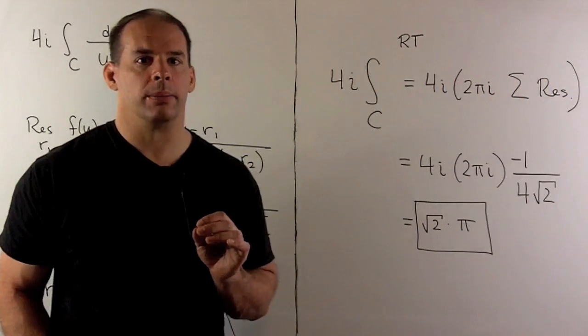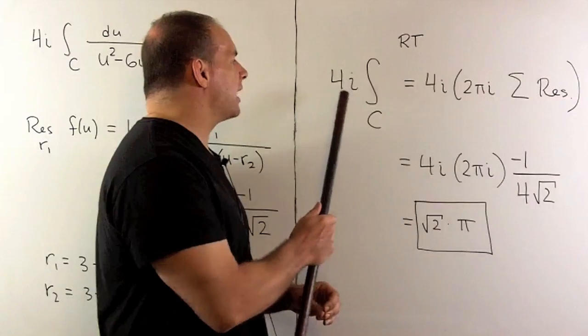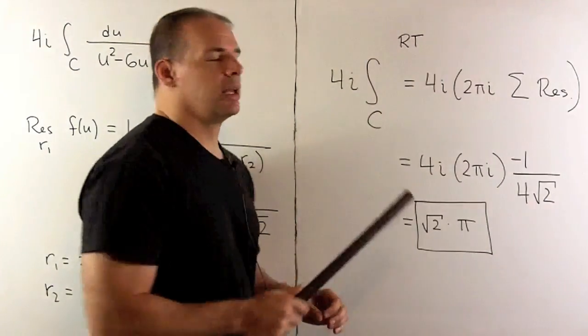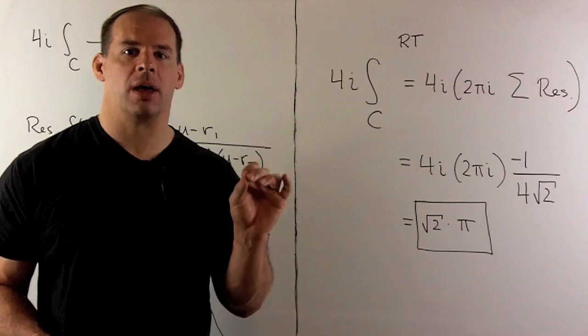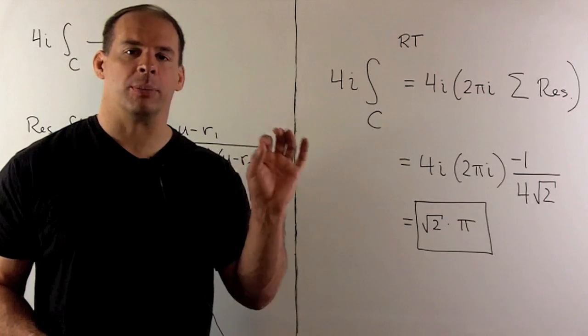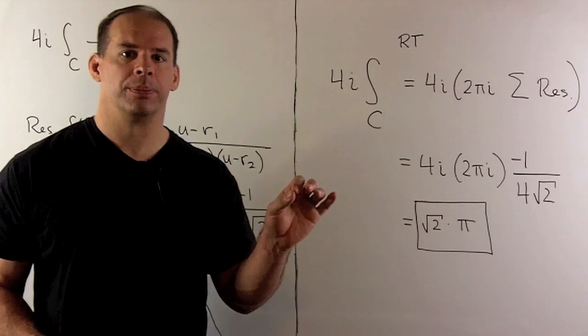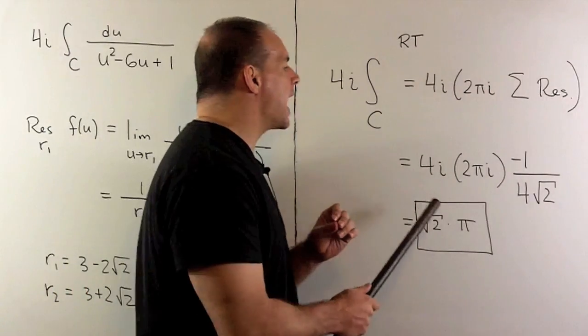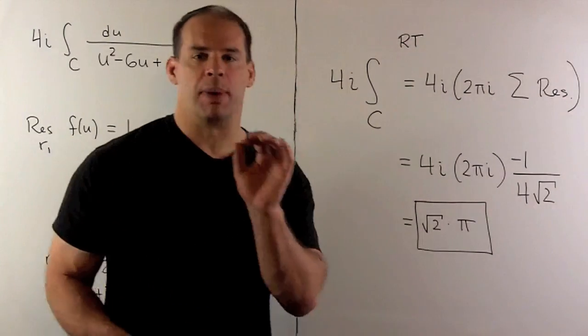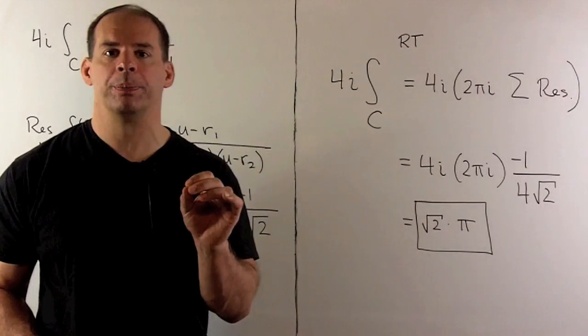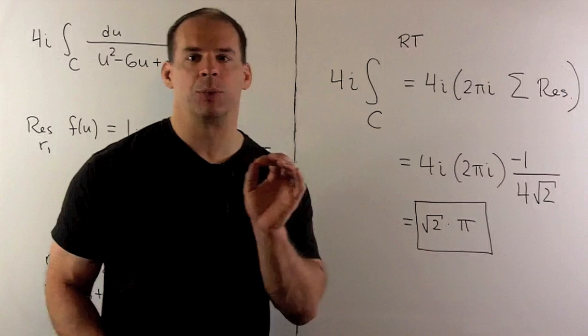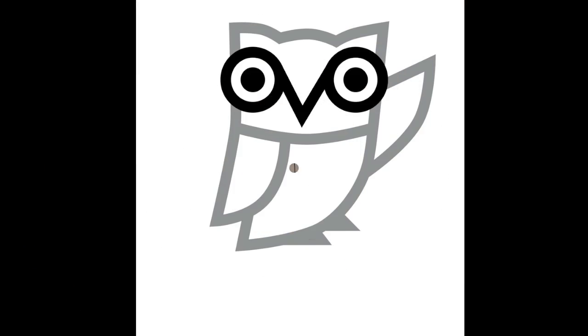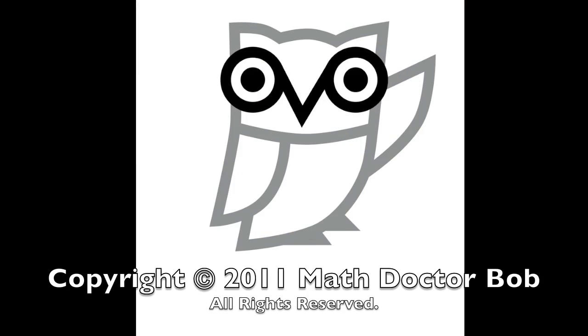We can invoke the residue theorem. We have 4i times our line integral. It's equal to 4i times 2πi times the sum of the residues at the poles in our region. So, we have 4i times 2πi times minus 1 over 4 square root of 2. And that simplifies to square root of 2 times π, as promised.